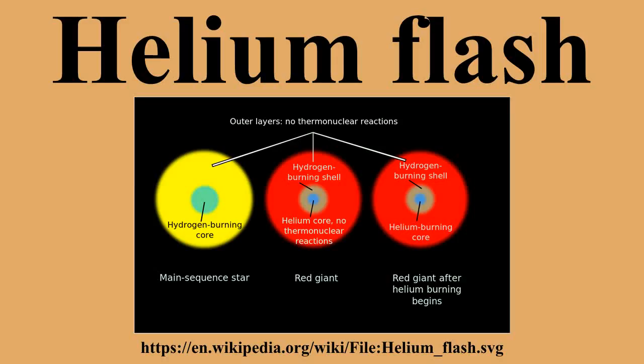Shell helium flashes are a somewhat analogous but much less violent, non-runaway helium ignition event, taking place in the absence of degenerate matter. They occur periodically in asymptotic giant branch stars in a shell outside the core. This is late in the life of a star in its giant phase. The star has burnt most of the helium available in the core, which is now composed of carbon and oxygen. Helium fusion continues in a thin shell around this core, but then turns off as helium becomes depleted.